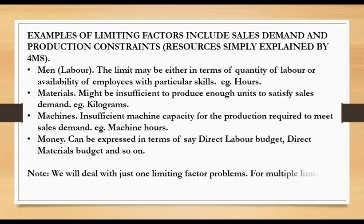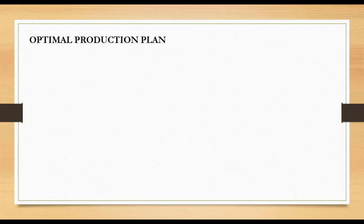For our case, we'll deal with just a single limiting factor. For multiple limiting factors, linear programming is usually used, but we won't look at that. An optimal production plan will ensure that contribution is maximized and thereby profit.